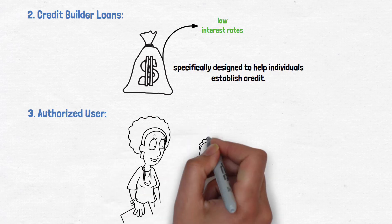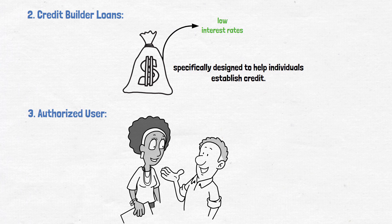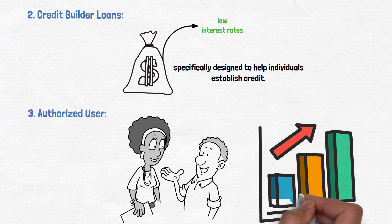Authorized User: Ask a trusted family member or friend with good credit to add you as an authorized user on their credit card account. This can help boost your credit as their positive payment history is also reported on your credit report.